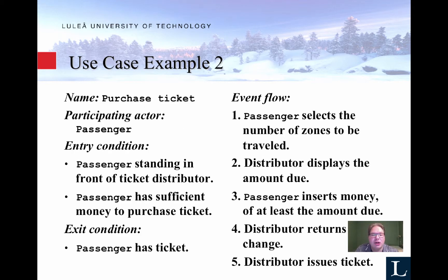Here is a slightly more complex case — a ticket machine. You want to purchase a ticket. The actor is a passenger standing in front of the ticket distributor with sufficient money. If everything goes well, the passenger will have the ticket at the end. The flow would be: select the number of zones, the distributor displays the amount due, the passenger inserts money, the distributor returns change, and then issues the ticket.